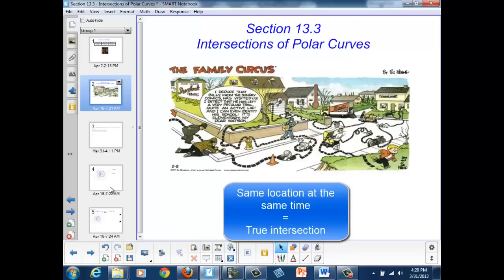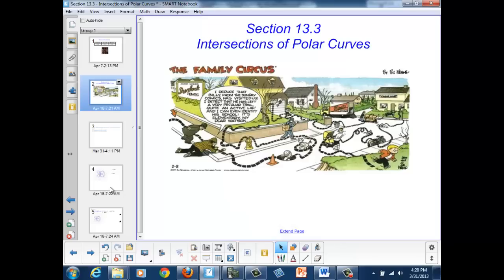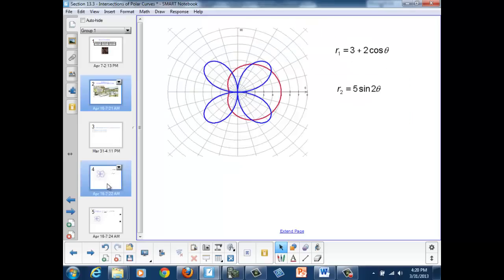When they're there at the same time and the same location, we consider that to be a true intersection. If the second student's path crosses over the first student's path after the first student has been through that location, we don't consider that a true intersection. So, let's figure out how to find a true intersection.